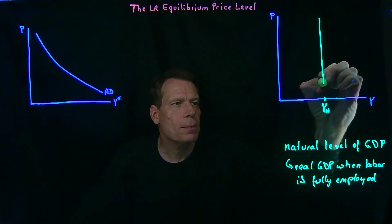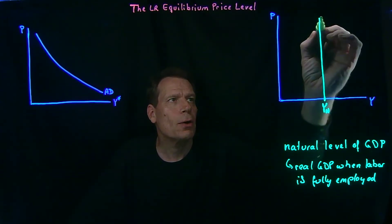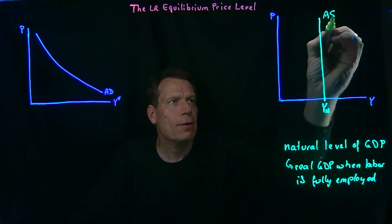So in the long run, we can put a vertical line here. And we're going to call that the long run aggregate supply curve.